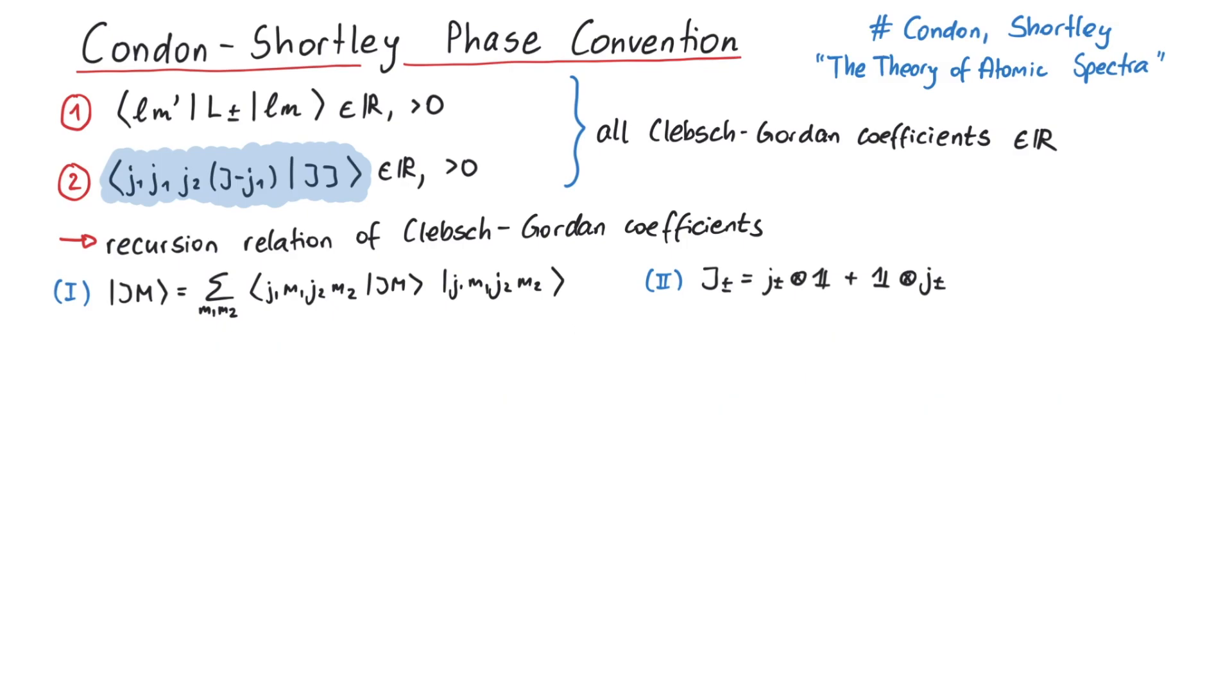If we now apply the ladder operator on the first equation, we can investigate the left-hand side and the right-hand side separately. On the left, applying the ladder operator simply yields the factor f plus minus that we defined earlier, and a state with different m, which we can write in terms of product basis states using Clebsch-Gordan coefficients.